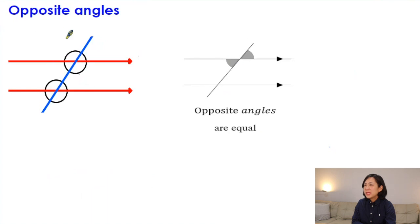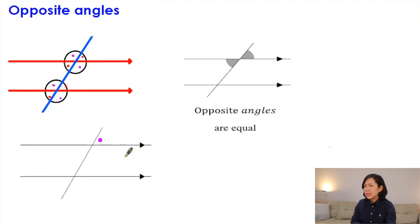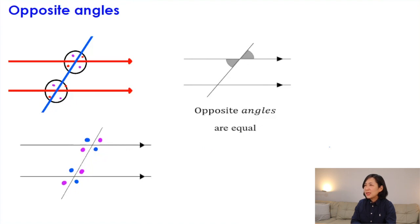Finally, the last rule: opposite angles are the same. Opposite angles are quite easy to notice, but try to also connect the other rules — spot alternate, corresponding, and allied angles as well. Starting with a purple angle, its opposite angle is the same size, and you can also find its alternate angle. All four purple angles are the same. For the greater blue angles, you can find the opposite angle, alternate angle, and corresponding angle as well. When dealing with angles in parallel lines, use all four rules together.